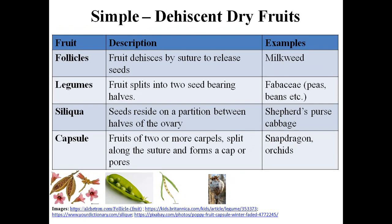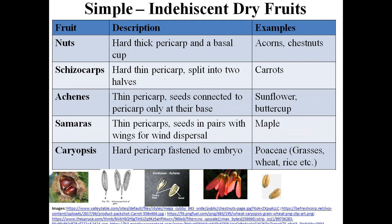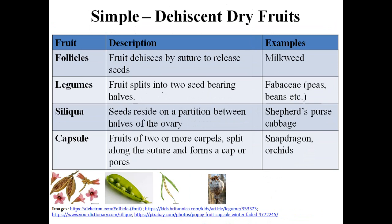Dry fruits are divided into dehiscent and indehiscent fruits. Dehiscent dry fruits have different types, including follicles, legumes, siliques, and capsules. In follicles, the fruits dehisce by sutures to release the seeds — for example, milkweed. The fruit splits open along sutures and the seeds are released.